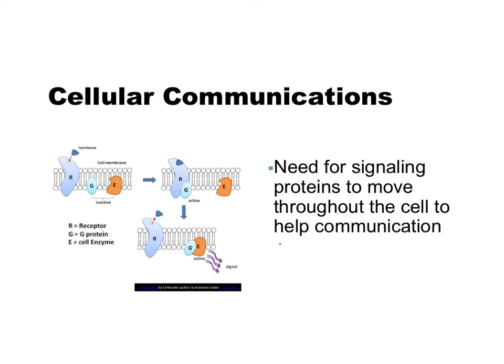The third factor that contributes to cell size limitations is cellular communications. Inside the cell, there are signaling proteins that help with communication and communicate instructions for certain cellular functions. For example, if a cell becomes too large, signals that trigger protein synthesis might not reach the ribosome fast enough for protein synthesis to occur in order to sustain the cell. Therefore, a smaller cell size is preferred.